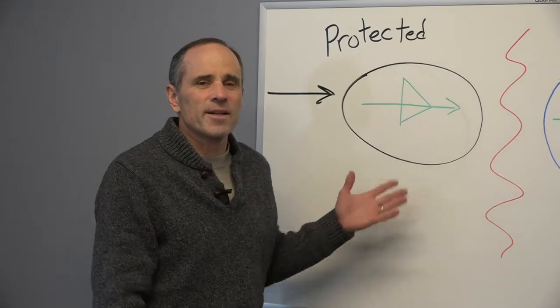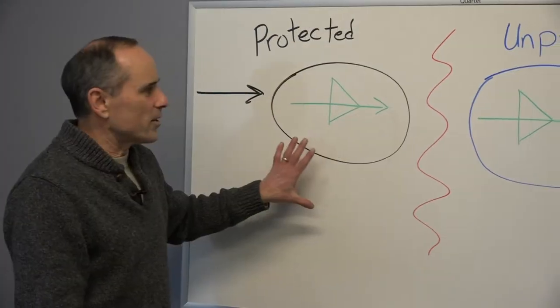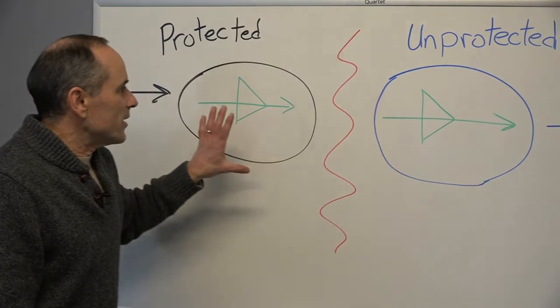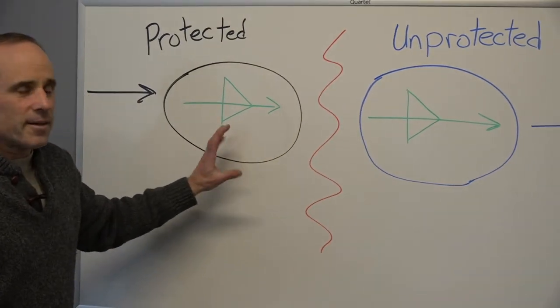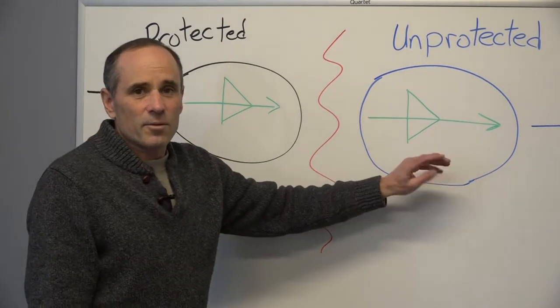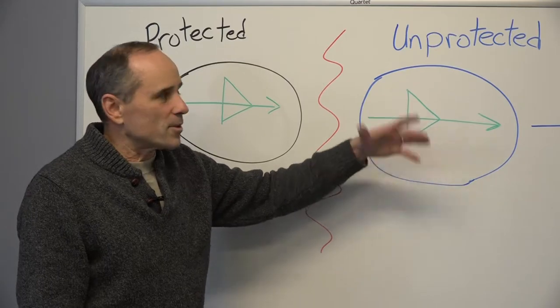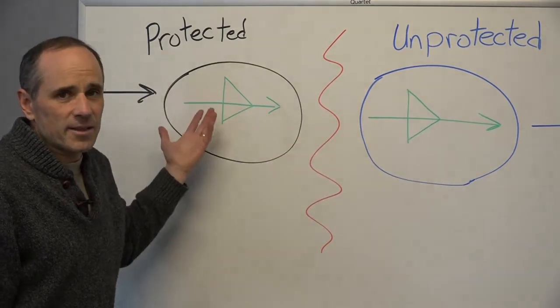So a data diode is actually broken into two halves. If you think about a source side, send side, the source side would be on your protected side and the receiving side where the destination is on the unprotected. So that would be the internet and this could be your protected power plant.